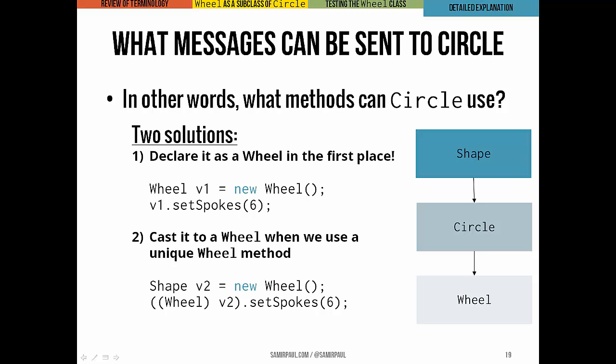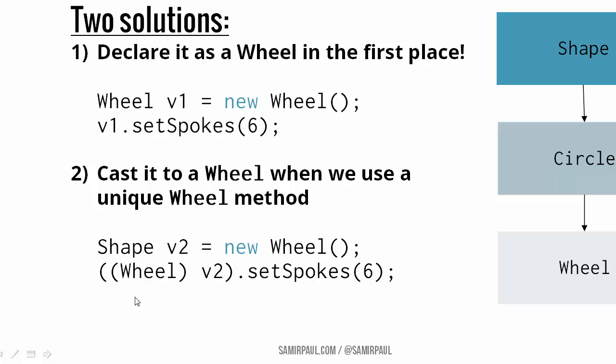Now there's two ways around this. One way is to just declare a Wheel variable to begin with. So don't even bother making a Shape variable pointing at a Wheel object. That may sound tempting, and maybe it'll work a lot of the time, but in general, it is our preference, a sort of religious preference, to declare interface variables where possible. The other way around it is to cast our Shape variable to a Wheel whenever we want to use a uniquely Wheel method. Again, that just means, just like before, when we could cast a double to an int or an int to a double or in different directions, we can also cast reference variables from one type to another. So here you can see we start Shape v2 equals new Wheel, and then, if we want to run the setSpokes method, all we have to do is temporarily cast v2 to a Wheel, and then we can call this Wheel specific method setSpokes.